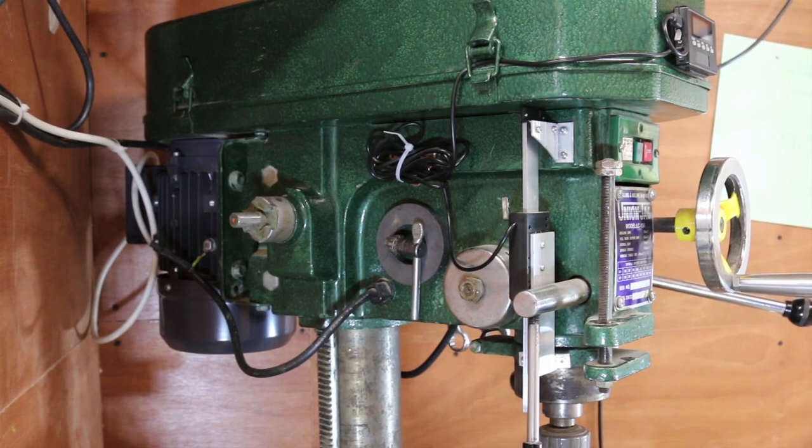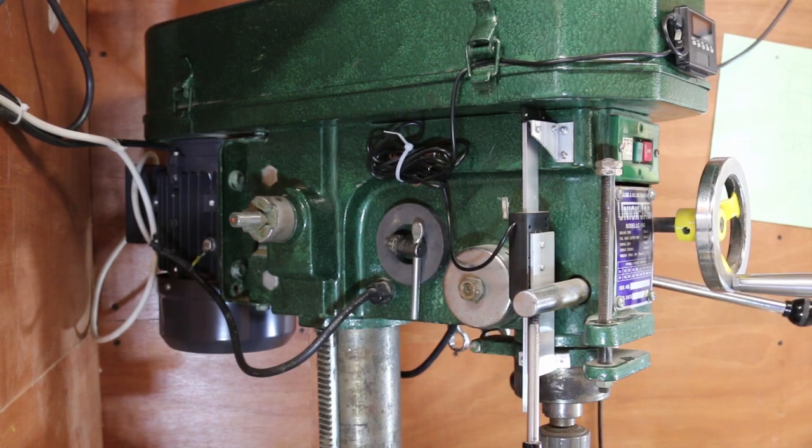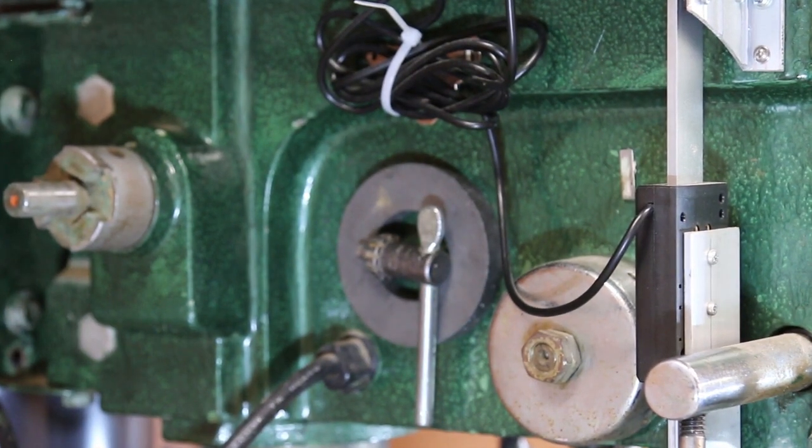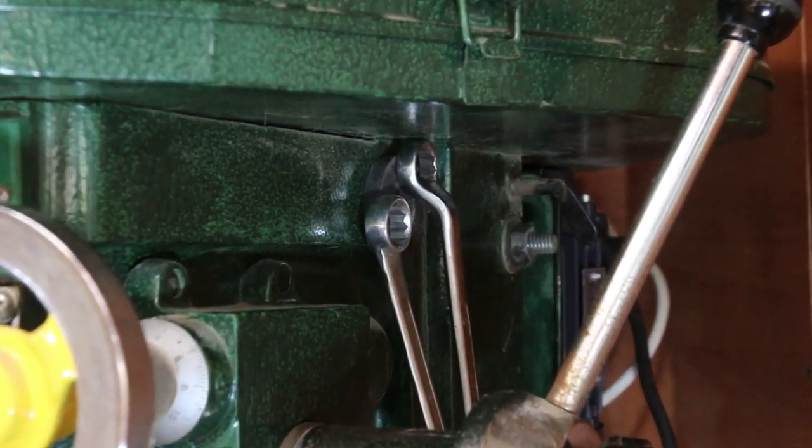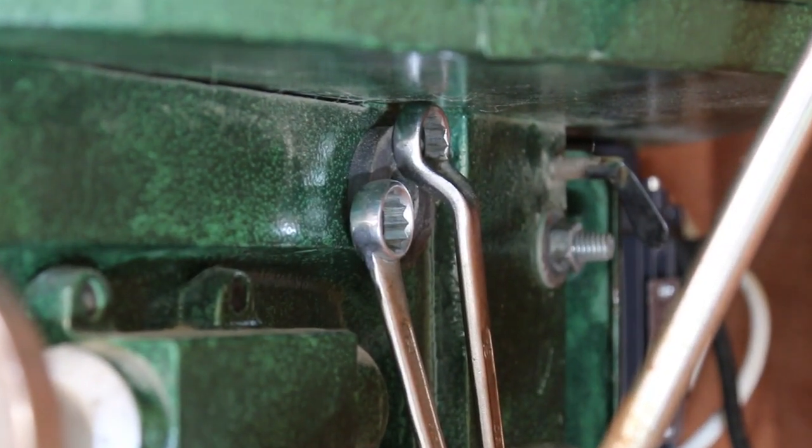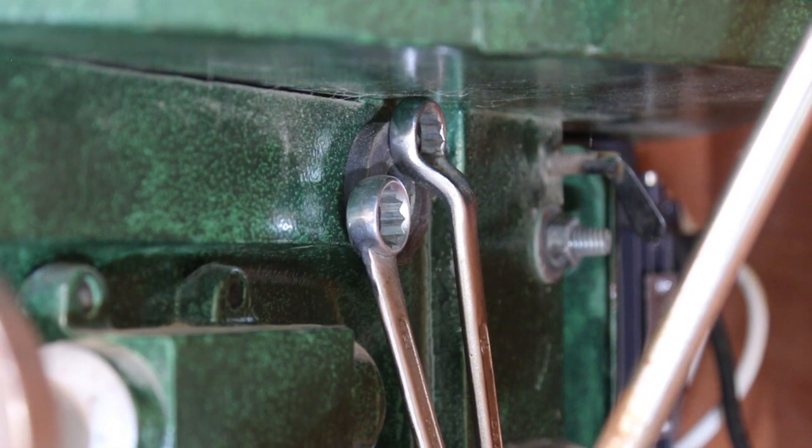Other small mods are a ring magnet on each side. One to hold the chuck key on the left hand side, and one on the right hand side to hold the spanners for unclamping the column bolts. These are simple mods but have transformed the use of the machine.